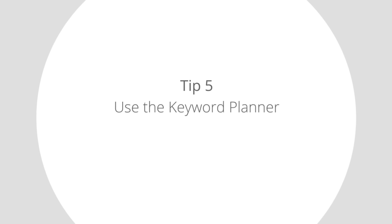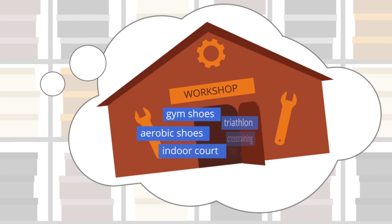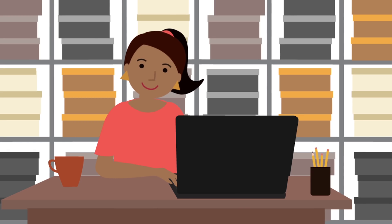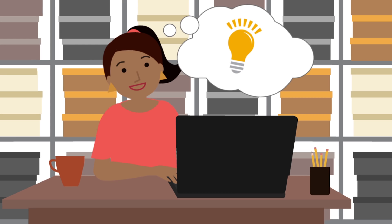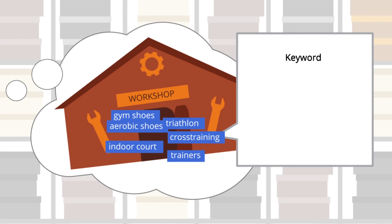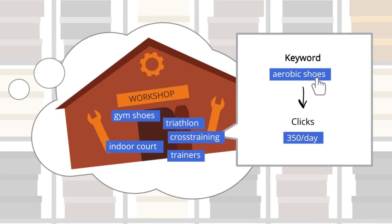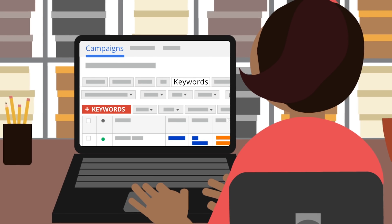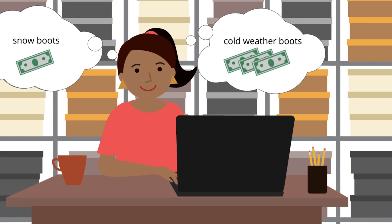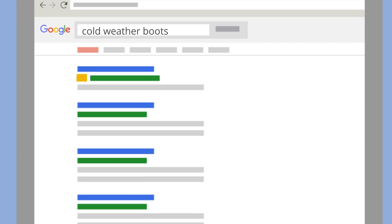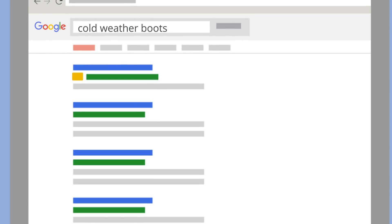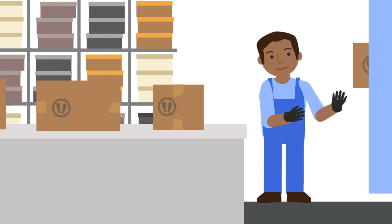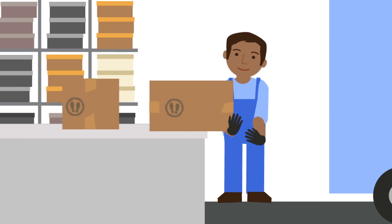Tip 5: Use the keyword planner. Think of the keyword planner like a workshop for building new ad campaigns or improving existing ones. Mary uses the keyword planner to come up with new ideas for effective keywords. It also helps her estimate the number of clicks she would get for her new keywords. Once Mary adds her keywords, she can check how they're performing in the keywords tab, increase bids on keywords that perform well, and get her ad in front of more customers. By following these tips, Mary was able to increase her sales by getting her ads in front of the right customers who clicked on her ads and bought shoes from her site.